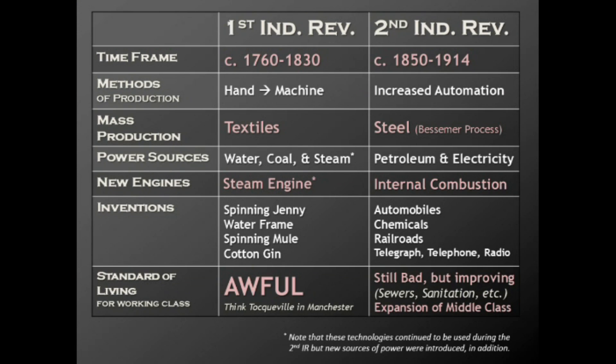Another thing to note is that in the second half of the 19th century and into the early 20th century, the standard of living for the working class is still bad by many standards, but it is improving. Many cities are adopting sewers, sanitation, purified water, and public health measures. We see an expansion of the middle class — it's still a pretty bad time to be poor, but more people are enjoying prosperity during the second Industrial Revolution than the first.